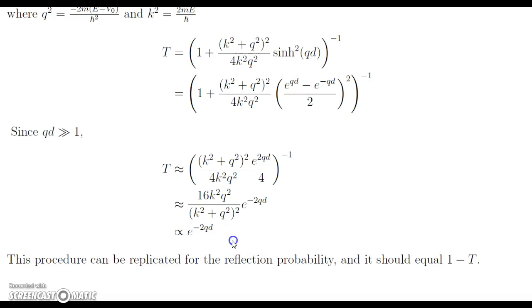I'm going to note at the end that also this procedure can be replicated for the reflection probability R, and it should equal 1 minus T after using this. So that'll be it. Thank you for your time. Bye.